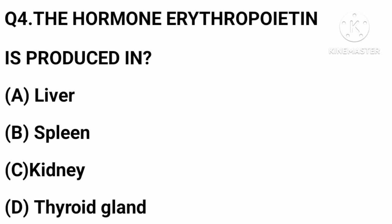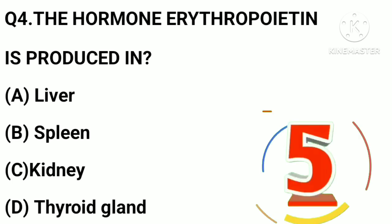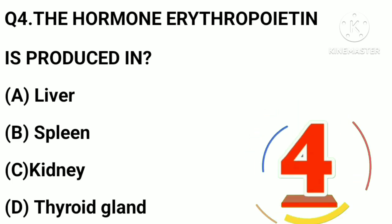The hormone erythropoietin is produced in: option A, liver; B, spleen; C, kidney; D, thyroid gland.